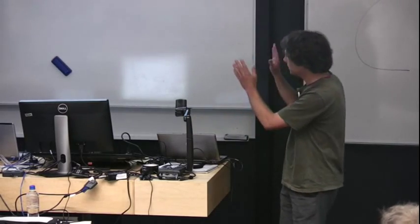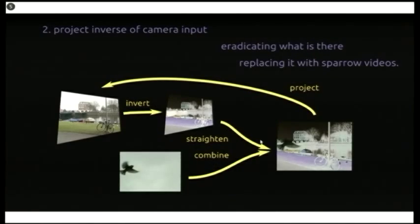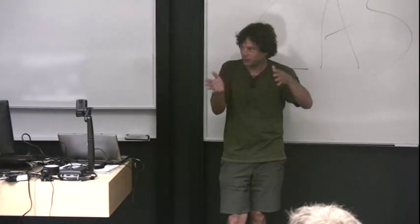And the first GStreamer plugin I wrote was - it had a camera that looked at this, worked out a transformation to a projection, and then it would project the negative image onto what it saw in front of it. So that whatever was on the wall would be eradicated by the projection. And if you walked in front of it, depending on the parallax between the camera and the projection, you'd sort of seem to disappear.